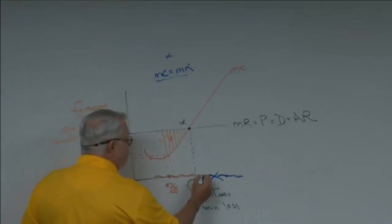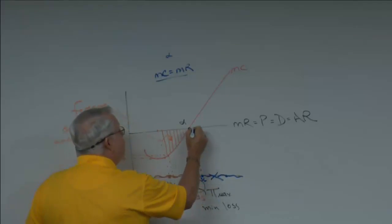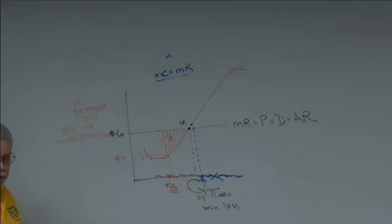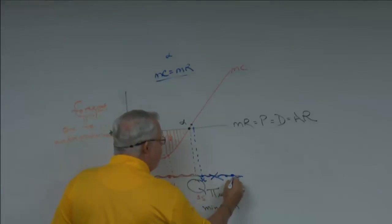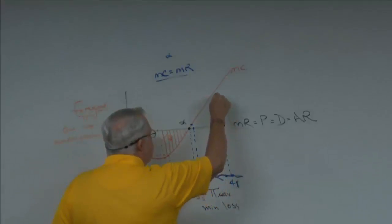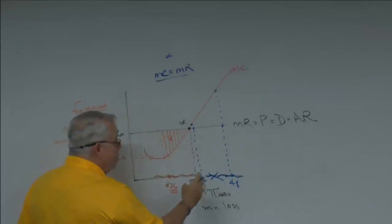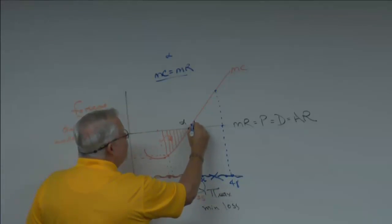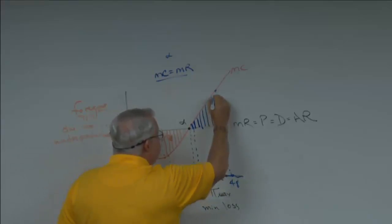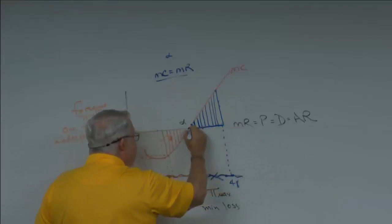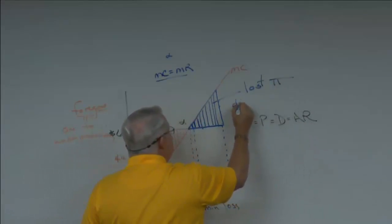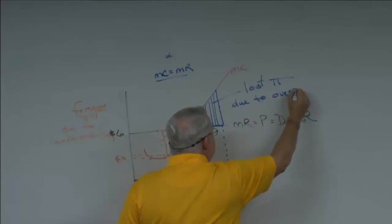If we exceed alpha and produce more than that — say unit 36 — it made me six bucks but it cost six dollars and 22 cents. Why would I do that? I wouldn't. If I go all the way out to 48 units, I have lost money on every unit after number 35. This shaded triangle represents lost profit due to over-production.